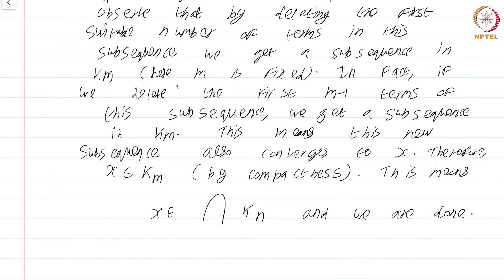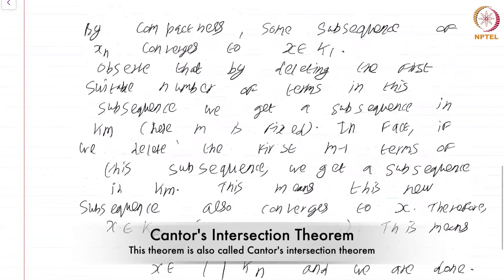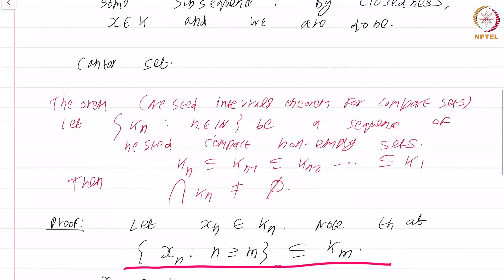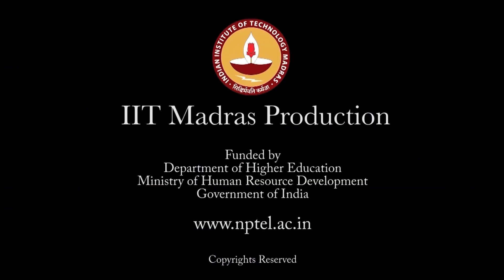So this nested intervals property generalizes to a nested intersection theorem for compact sets. This is a course on real analysis and you have just watched the module on the Heine-Borel theorem.